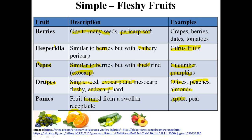Pomes are fruits formed from a swollen receptacle. The receptacle is a disc-shaped structure on which sepals, petals, stamens, and carpels grow. Examples of pomes are apple and pear. The receptacle sits atop the flower stalk (pedicel), and sepals, petals, and stamens are all developed on the receptacle, along with the ovary. This floral arrangement later develops into the fruit in the case of pomes.